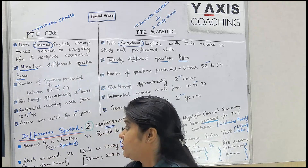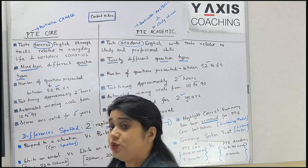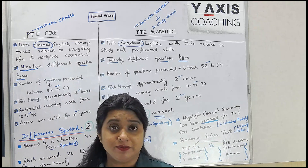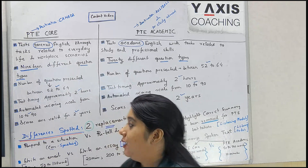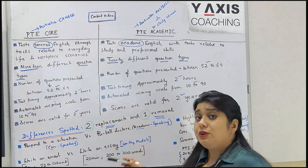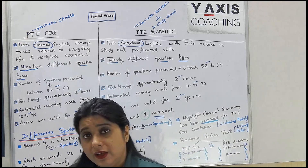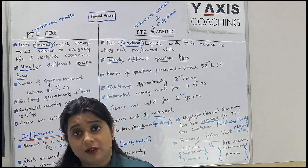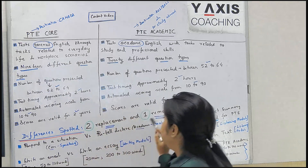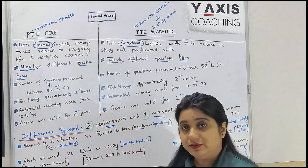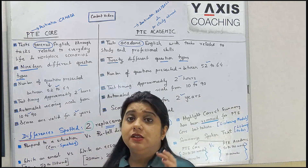PT Core test takers get nine minutes for writing the email, with a word limit of 50 to 120 words. Things have become easier. These are the two replacements: retell lecture has been replaced by respond to a situation, and essay writing has been replaced by email writing. And one removal - 'highlight correct summary' has been removed from the listening module.